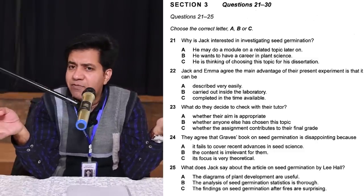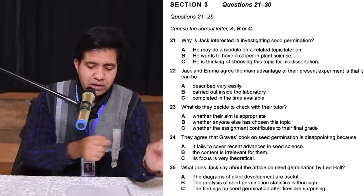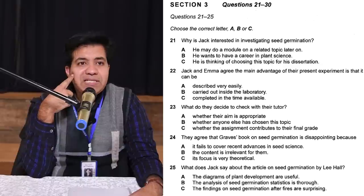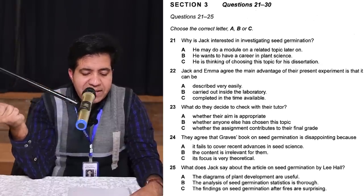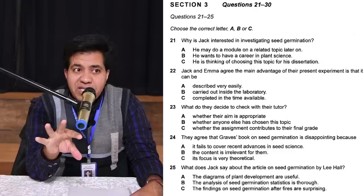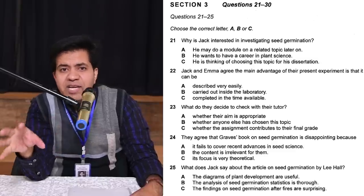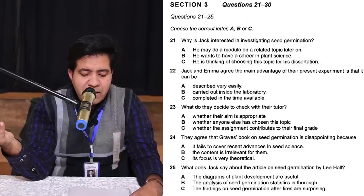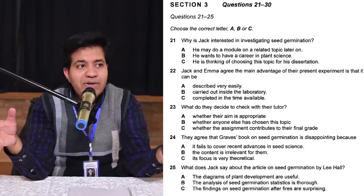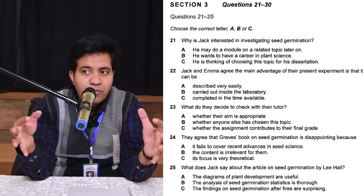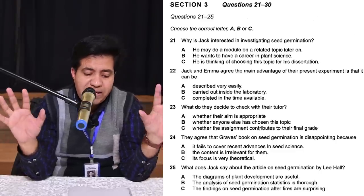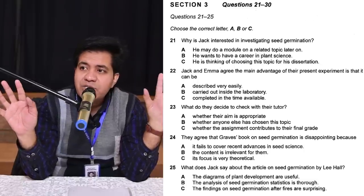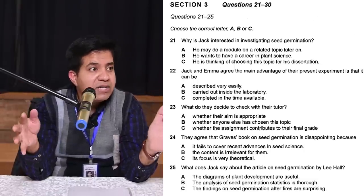Now, when they say 'main advantage,' there can be partial or minor advantages too — but focus on the main one. Option A: can be described very easily. Option B: can be carried out inside the laboratory — think about whether the experiment can be done in the lab. Option C: can be completed in the time available — meaning within the time limit or they can meet the deadline. Listen carefully — they will talk about all three options and you decide where they agree.